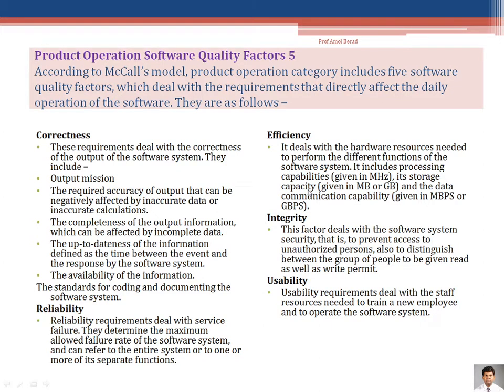The fourth factor is Integrity. This deals with software system security — only authentic users should be allowed to use the application. Unauthorized users should be declined immediately. Hackers performing malpractices and interacting indirectly with your application should not be allowed. Authenticity of a user is most important when considering the product operations factor of integrity.